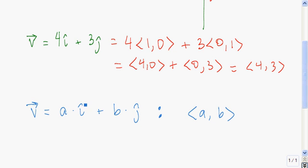So the vector a times i-hat plus b times j-hat is simply the vector <a, b>.